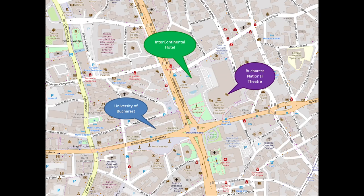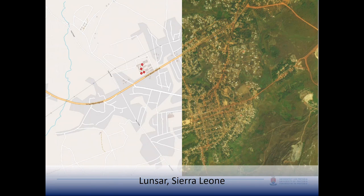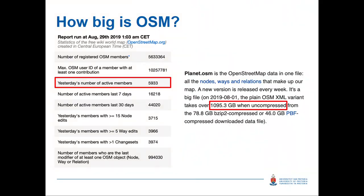There are different areas that look very different. We can see the density of information-rich Bucharest versus an area called Lunsa in Sierra Leone, which is hardly mapped. You can see on the map and the aerial imagery that it is a densely populated place with lots of buildings, yet on the map there's nothing except four little hospitals. Now imagine the Ebola outbreak that has been happening in West Africa — aid workers want to go out and spread vaccines but unfortunately there's no density information. This is why OpenStreetMap is important.